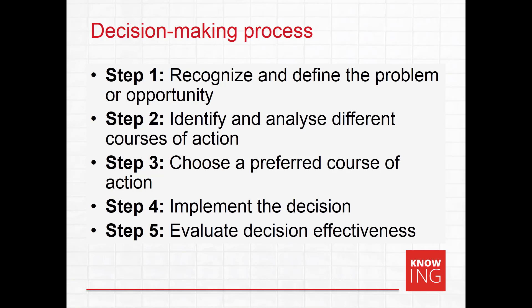The last step of the decision making process involves evaluating how effective the decision was, in order to make the best possible decisions in the future. Sometimes this involves a formal after action review. This process is actually a cycle rather than a linear process, with final evaluation sometimes requiring a return to earlier steps if the decisions were found to be inadequate.